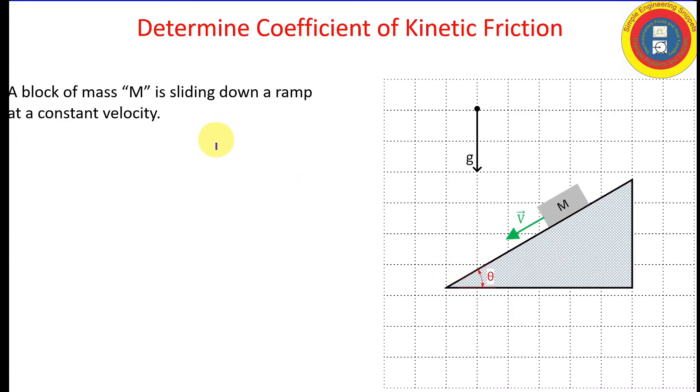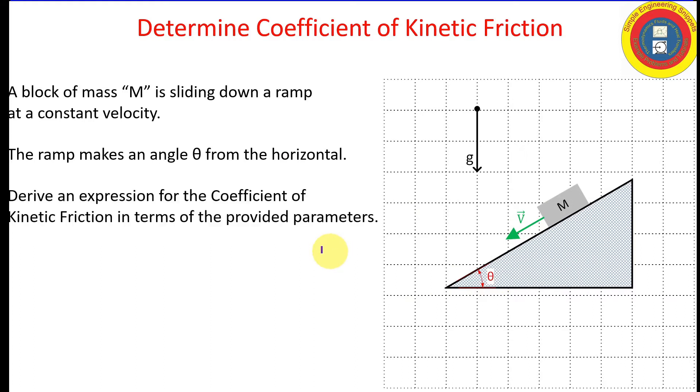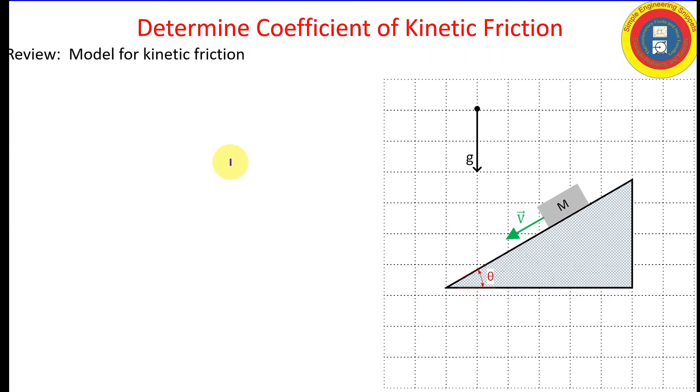Okay, let's get to our example problem. So once again, we have a mass that's sliding down this ramp at a constant velocity. The ramp makes an angle theta with the horizontal. And our goal is to determine an expression for the coefficient of kinetic friction.